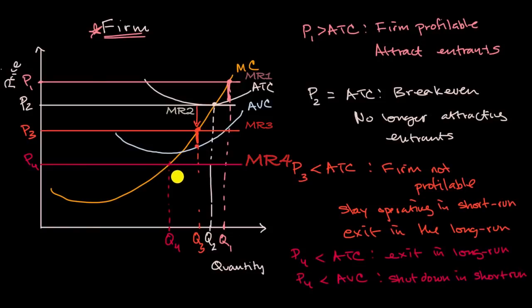So big picture, from a firm's point of view, you obviously want to be at P one where you make a profit, but you might attract entrants. At P sub two, you as a firm in the long run are neutral versus exiting the market or entering the market or other people entering the market. You're at break even.